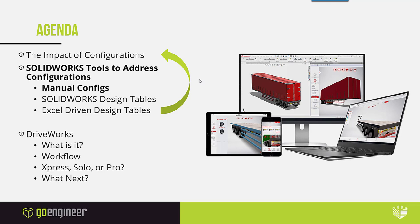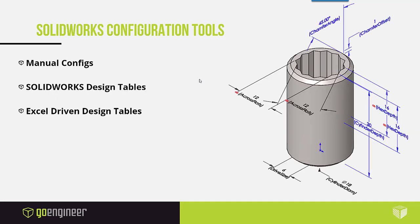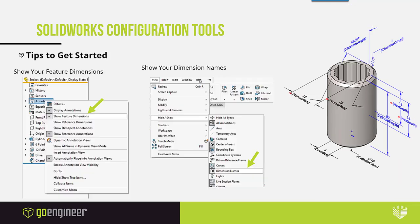Now let's talk about the three ways within SOLIDWORKS to manage configurations. We'll use a socket as our example throughout — it's a great case because it's similar but different. It always has a cylinder with chamfers, a certain height, and a cutout for the size, whether that's a six-point or twelve-point socket. The first method is manual configurations.